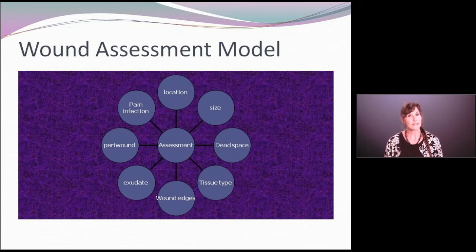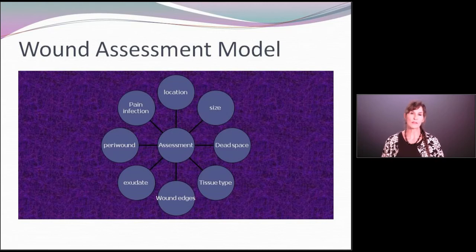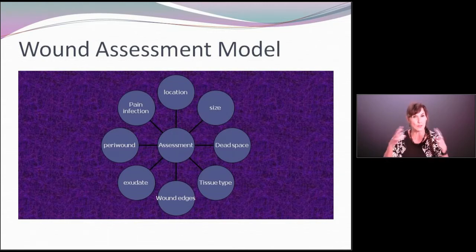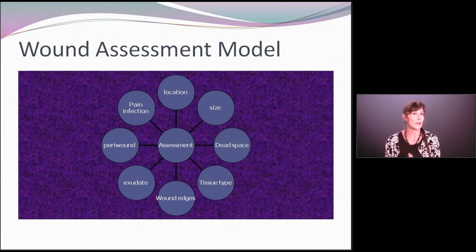We are looking at things like size, location, whether there is pain or infection present. What is the condition of the peri-wound — that is, the condition of the tissue immediately around that wound? Because that's going to determine sometimes whether a wound is getting worse or better, or it may help us determine our dressing change choices.